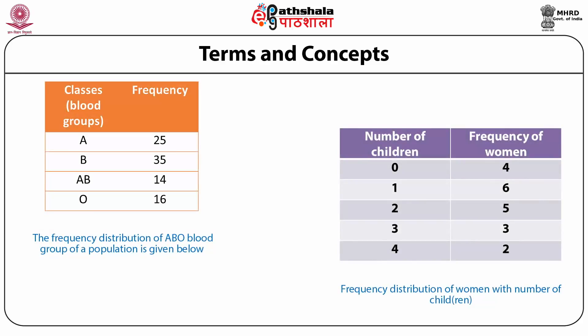The number of times a particular variable appears in a count is defined as frequency. For example, the number of persons affected with tuberculosis in an area, the number of females in a village, or the number of women having 0, 1, 2, or 3 children. As we can see from Table 1 and Table 2, the frequency distribution of ABO blood group of a population and the frequency distribution of women by number of children is shown here.